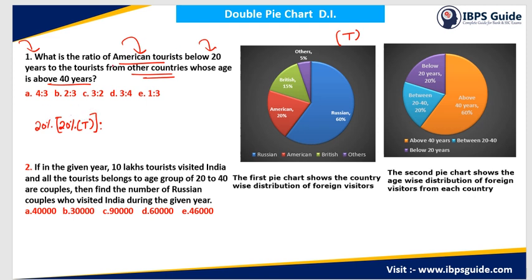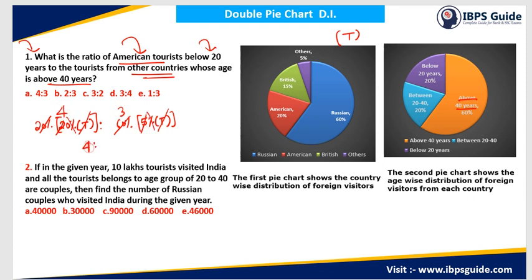We need the ratio with respect to tourists from other countries. Other countries account for 5% of T, so 5% of T gives the total visitors from other countries. They must be of above 40 years of age, which is 60%. So I take 60% of that. The T and T cancel out. 20% times 20% versus 5% times 60% — simplifying, 20 times 20 is 400, and 5 times 60 is 300, giving us a ratio of 4 is to 3. So the answer is Option A.